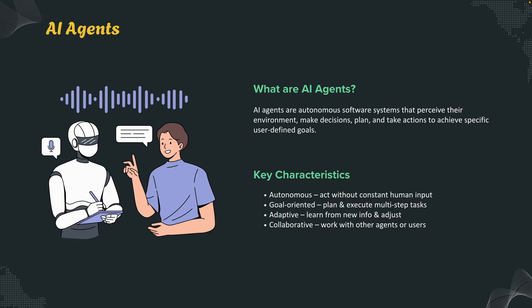These are the key characteristics of AI agents. They are autonomous — they don't need you to babysit them. They are goal-oriented — they understand what success looks like and what exact goal they need to reach. They are adaptive — they learn and improve from previous interactions. And they are collaborative — capable of working alongside humans and other AI agents as well.